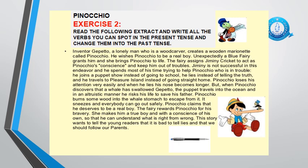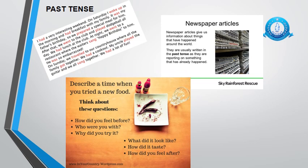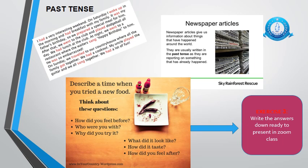For the past tense — different articles and materials use the past tense, like newspaper articles or when you're writing a diary entry. Now for exercise number three, describe a time when you tried a new food. Think about these questions: How did you feel before? Who were you with? Why did you try it? What did it look like? How did it taste? How did you feel after? When you answer these questions you'll automatically find yourself answering in the past tense. I'd like you to write the answers down ready to present in Zoom class, as I'll pick any student and ask them to answer any of these questions.